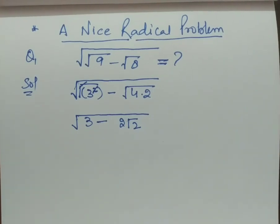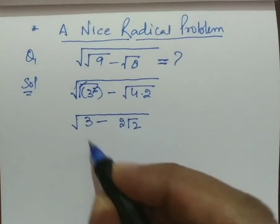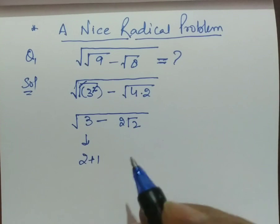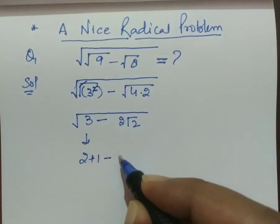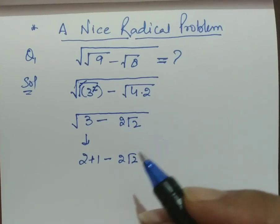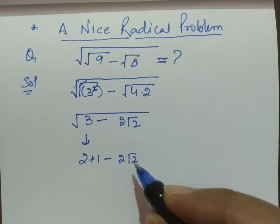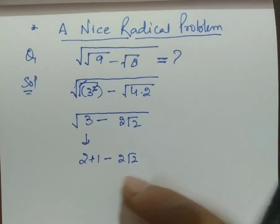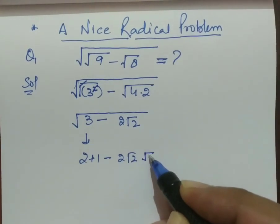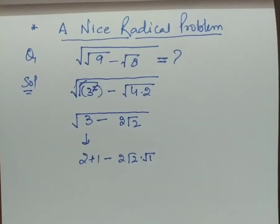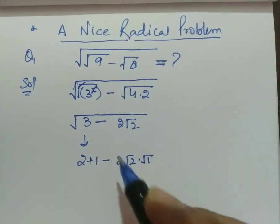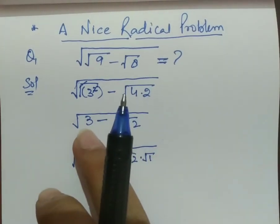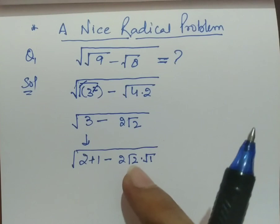So now what we have to do is we can write this 3 as 2 plus 1 negative 2 root 2. And we can multiply by 1, actually there is no change when we multiply by 1. So we can multiply by root 1. Now why I split 3 into 2 plus 1 and this is written in this form?